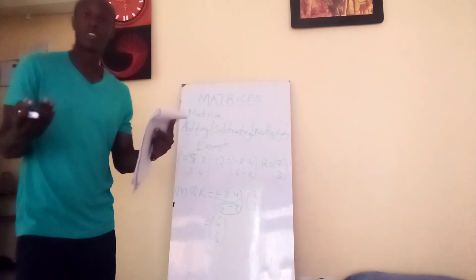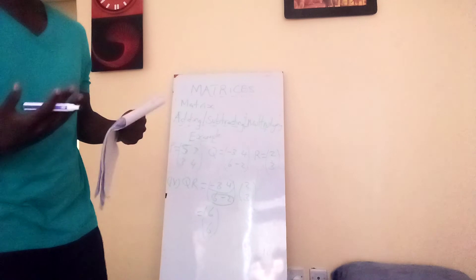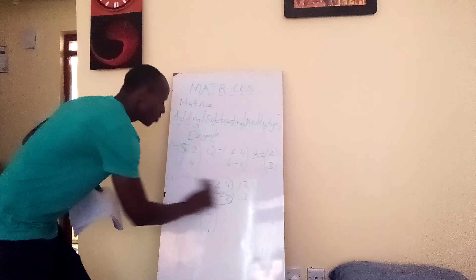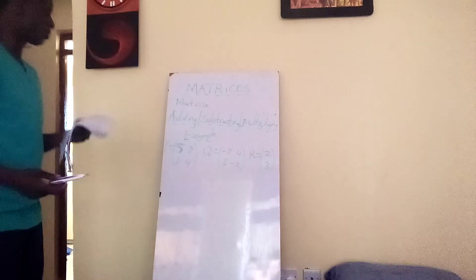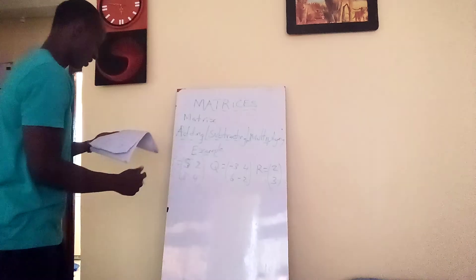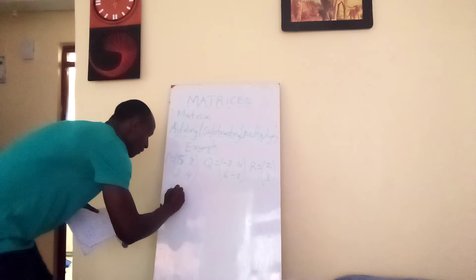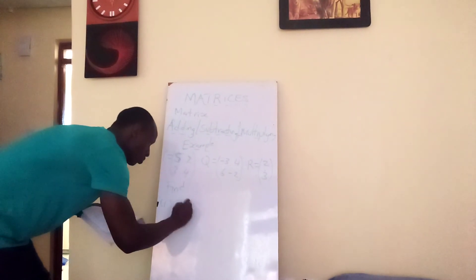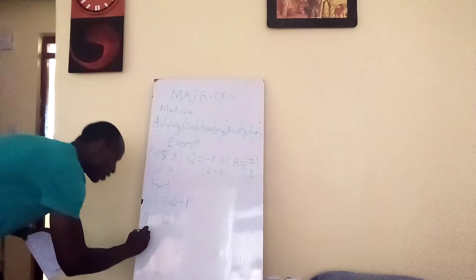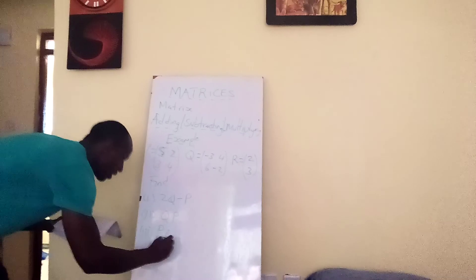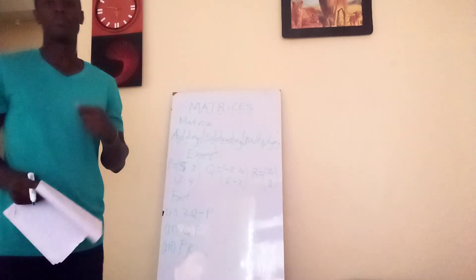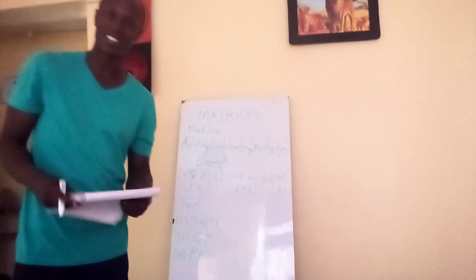That's our lesson for today. To review: a matrix is a regular arrangement of numbers, it has an order given by rows and columns, and we covered addition, subtraction, and multiplication. As practice during your self-isolation, try these exercises using the same matrices P, Q, and R: find 2Q minus P, find QP, and find PR. I hope today's lesson has been of great assistance, and we'll continue with matrices in our next lesson. Thank you, students.